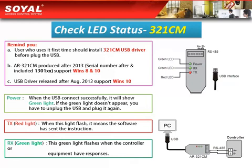Looking at the 321CM device, there are three lights on it. The first green light stands for the power light — when the USB connects successfully, it will show green. If the green light doesn't appear, unplug the USB and plug it in again. The second is the TX light: a red flashing light indicating the software has sent an instruction. The third is the Rx green light, which flashes when the controller or equipment responds.